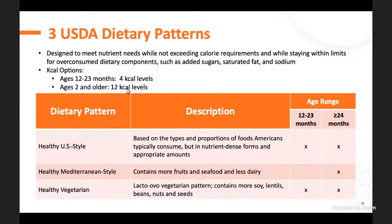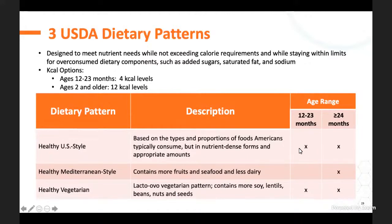In the report, from 12 to 23 months there are dietary patterns at four calorie levels, and for age two and older, there are 12 calorie levels. If you're working with someone who requires 1,800 calories, you can look up the healthy U.S.-style pattern at 1,800 calories and see exactly how many servings from each food group to consume to meet those goals. The healthy U.S.-style is based on the types and proportions of foods Americans typically consume, but in more nutrient-dense forms, with patterns for both toddlers and adults. The healthy Mediterranean-style contains more fruits and seafood and less dairy, and is available for adults.